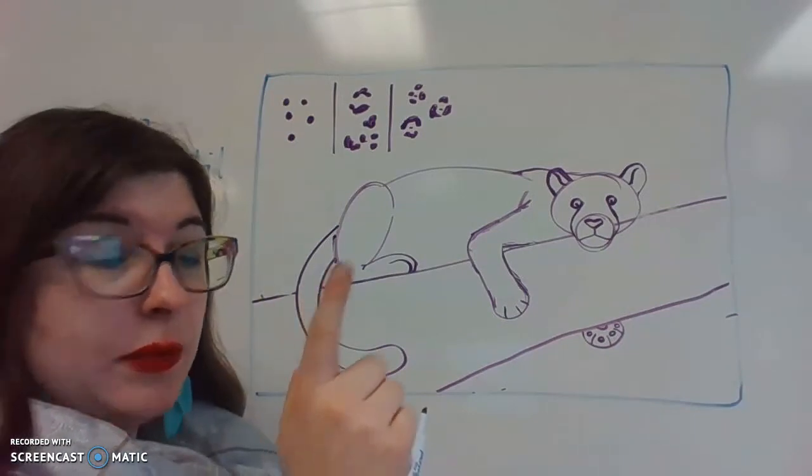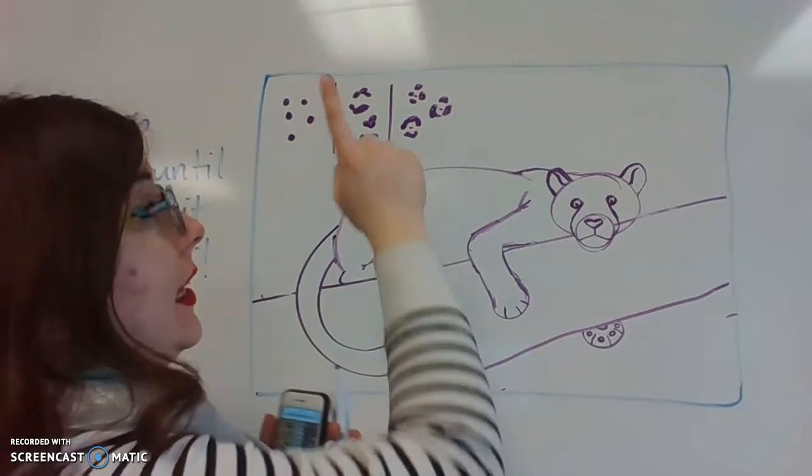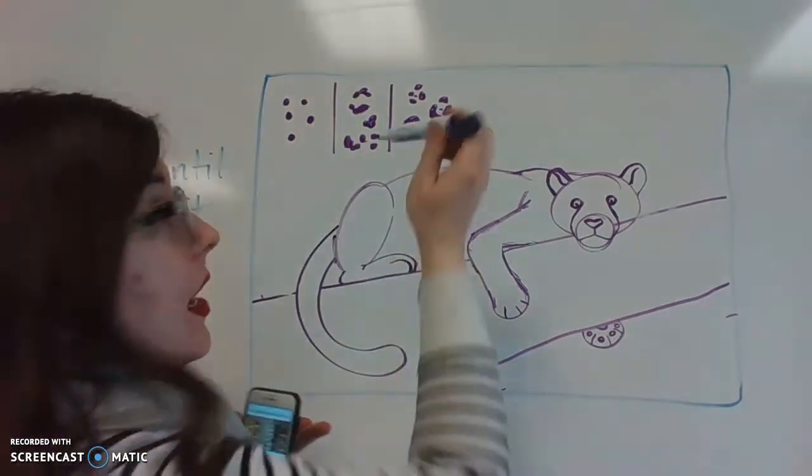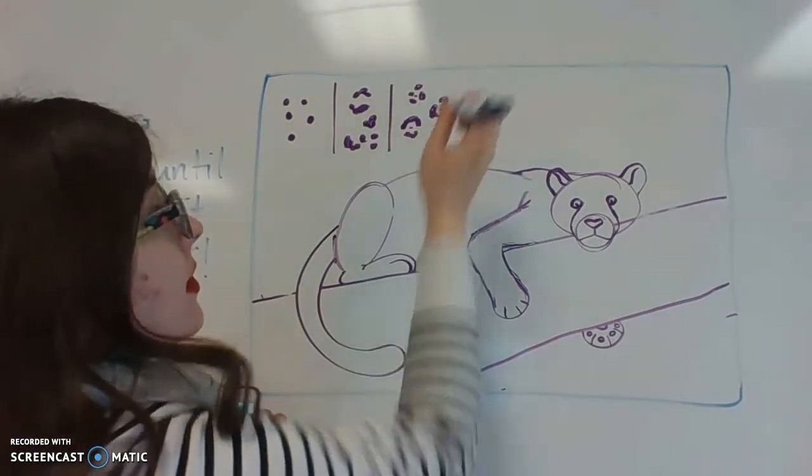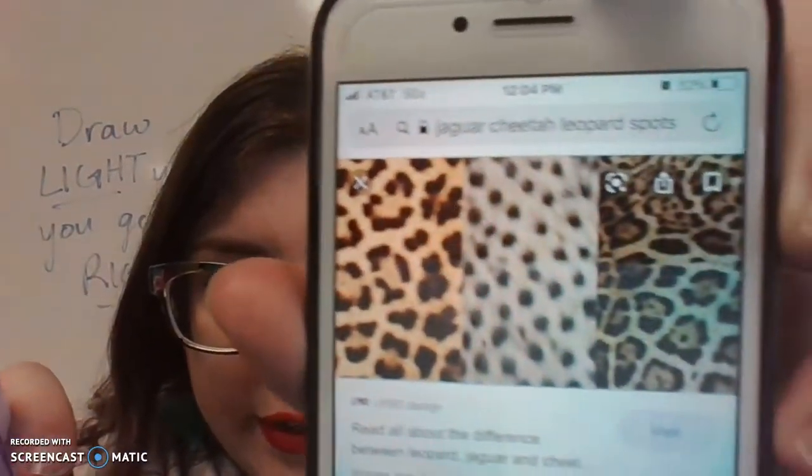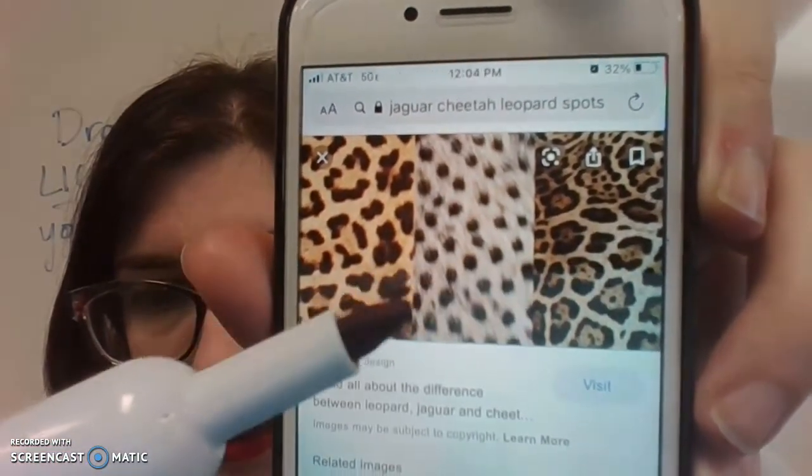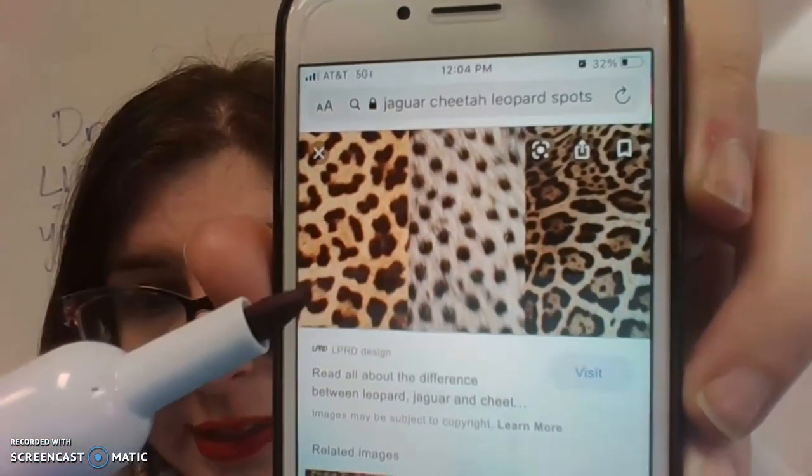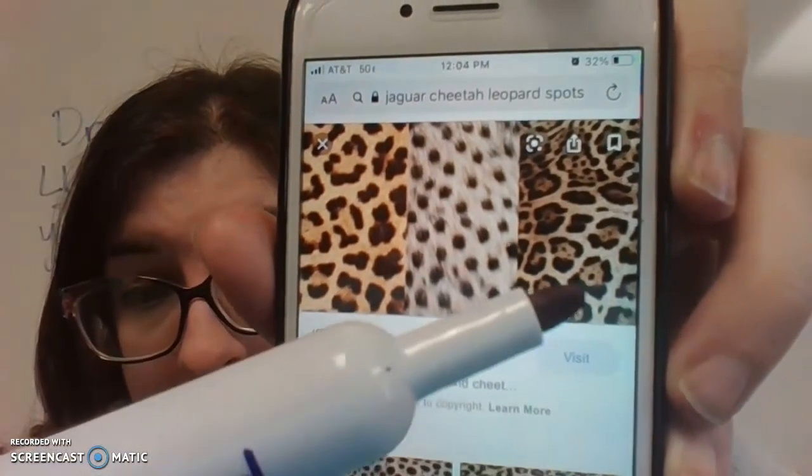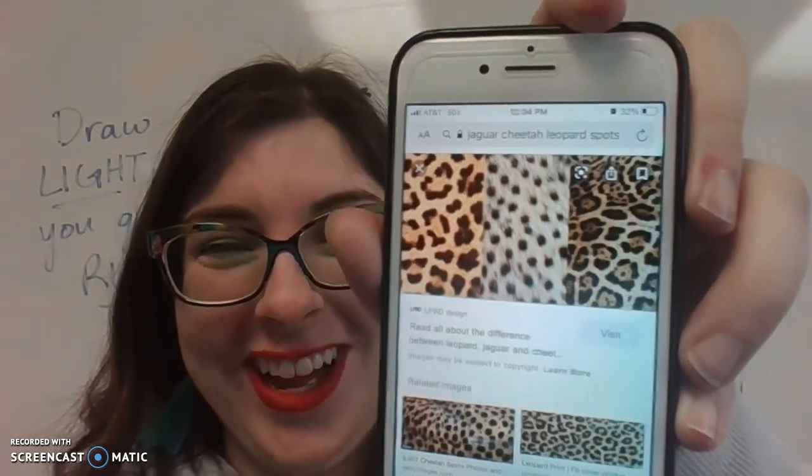Jaguars, what they did was they took the leopard spot and they went one further and put little dots in the middle. Now, sometimes it's just one dot, sometimes it's a bunch of little dots. But let me show you on my phone. You know, this isn't very professional, but I'm not a YouTuber. So this middle section, cheetah, this side section, leopard, this most complicated one, jaguar. Aren't you glad we're doing the most complicated one?